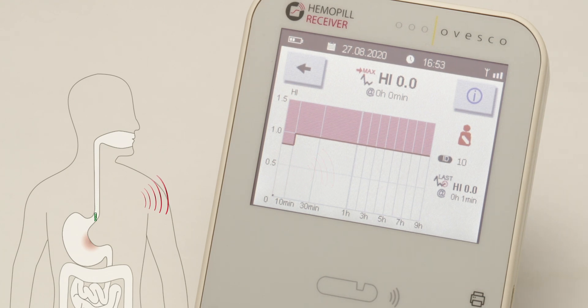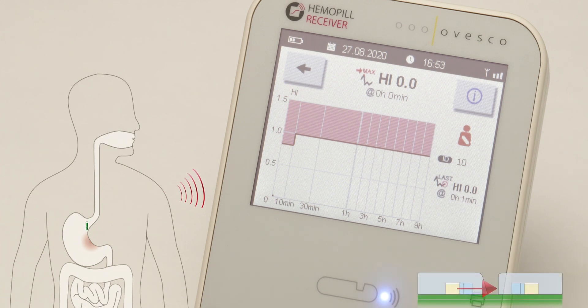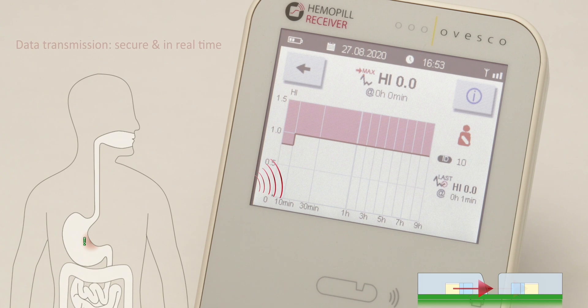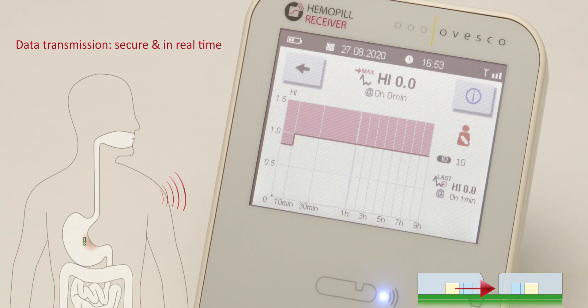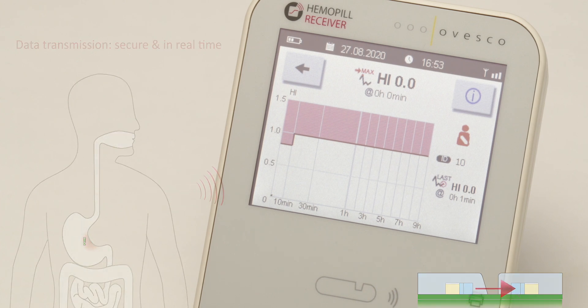Using a photometric method, the capsule measures even small quantities of liquid blood or hematin. The data transmission is secure and takes place in real time, allowing for immediate detection of acute bleeding.